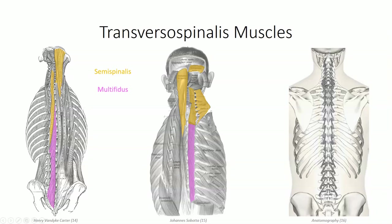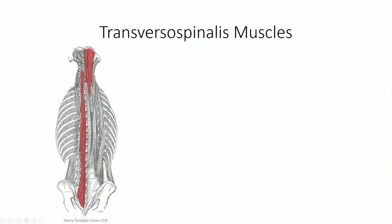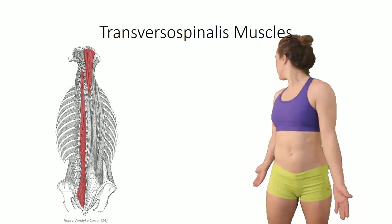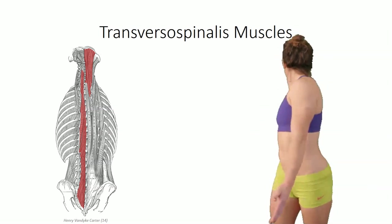Multifidus is the second of the transversospinalis muscles. Fibers tend to span two to four spinal segments. Multifidus is thick and prominent in the sacral region but quickly thins and disappears toward the lower thoracic region. In the space where there is overlap, semi-spinalis lies superior to the multifidus muscle. Rotatoris is the deepest of the transversospinalis group; at each vertebral segment there is a brevis portion spanning only a single segment and a longus portion spanning two vertebral segments. The transversospinalis muscles work collectively to assist with trunk extension, and unilateral contraction contralaterally rotates the upper trunk to the opposite side.